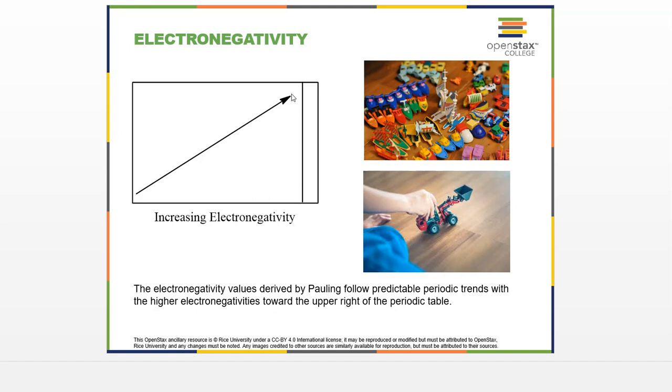Basically, fluorine is the most electronegative atom, and oxygen is the second most electronegative atom, followed by chlorine. Electronegativity is kind of like how much the atom likes electrons. So fluorine likes electrons more than oxygen.